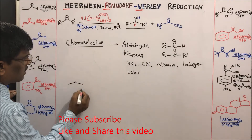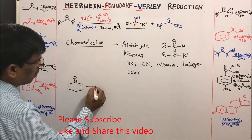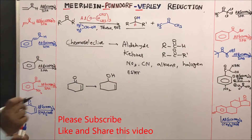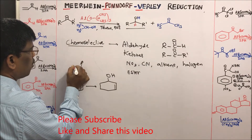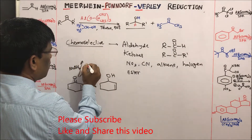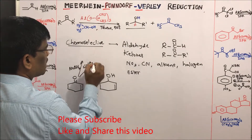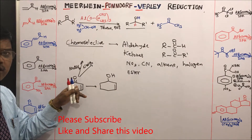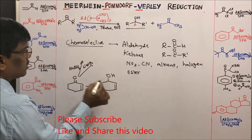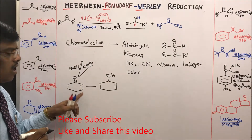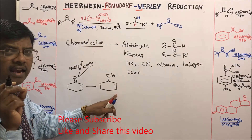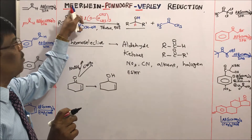For example, consider the conversion of 2-cyclohexen-1-one to 2-cyclohexen-1-ol. If you use sodium borohydride, think about what compound you would get. If you use lithium aluminum hydride, think about what compound you would get. MPV reduction converts alpha-beta unsaturated ketones to alpha-beta unsaturated alcohols very specifically.